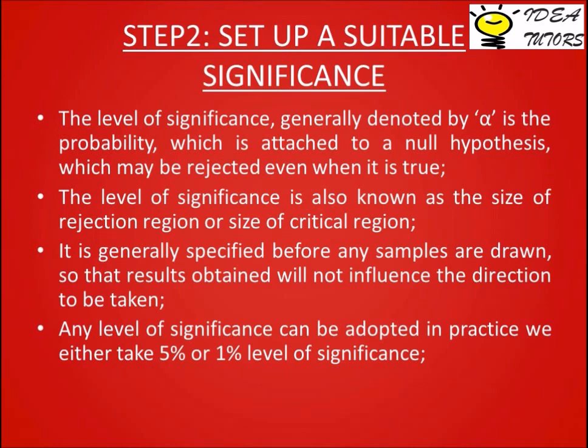Step 2: Set up a suitable significance level. The level of significance, generally denoted by alpha, is the probability attached to a null hypothesis which may be rejected even when it is true. The level of significance is also known as the size of the rejection region or size of the critical region. It is generally specified before any samples are drawn so that results obtained will not influence the decision taken. In practice, we either take a five percent or one percent level of significance.